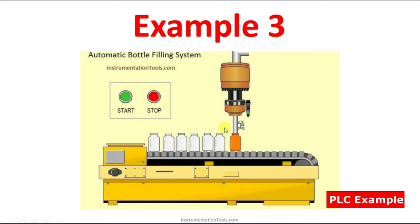This is the tank, and here we have one valve output which will open or close according to our logic. Here we have one sensor which is going to detect the presence of the bottle. Once you turn on the process, the conveyor will be running and the bottle will be moving. Once the sensor turns on, the valve output has to turn on for filling the bottle. After that, again the bottle has to move, the sensor will detect again, and this process will continue until you press the stop push button.